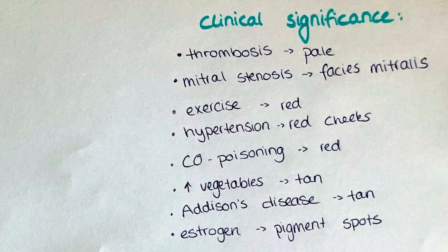A more red skin color can indicate hyperperfusion after exercise, hypertension, or also carbon monoxide poisoning, in which also the mucosa will be red. A patient with Addison's disease will appear tan with a brown to orange appearing skin color not related to sun exposure. Research suggests that even regular consumption of fruits and vegetables with high contents of carotenoids gives an individual's skin a more golden tan appearing tone.